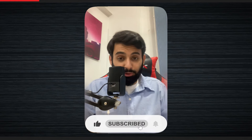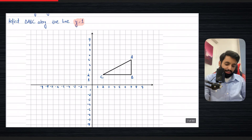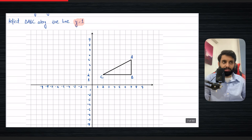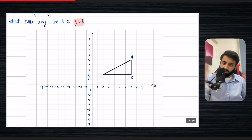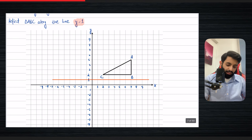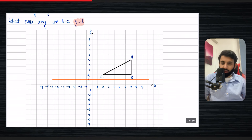It says here: reflect triangle ABC along the line y equals 1. First things first, if the line y equals 1 is not drawn, what kind of line is it going to be? Whether it's horizontal, vertical, upward sloping, or downward sloping — that's what we're looking for. Y equals 1 is a horizontal line that cuts the y-axis at 1.